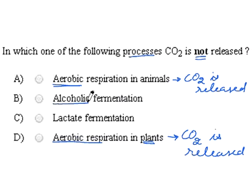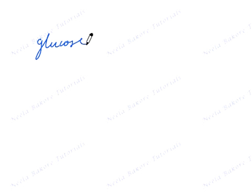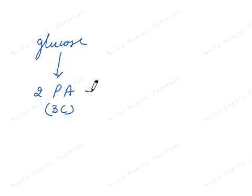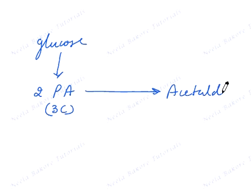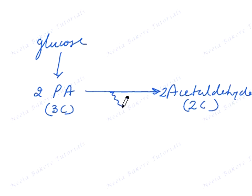Let us take option B — alcoholic fermentation. Alcoholic fermentation is anaerobic, meaning glucose is broken down in the absence of oxygen to give two molecules of pyruvic acid. Pyruvic acid is a three-carbon compound. Each pyruvic acid gets converted into acetaldehyde. From two pyruvic acids, we get two acetaldehyde molecules, and each acetaldehyde is a two-carbon compound. During this conversion, two carbon atoms are released in the form of carbon dioxide.